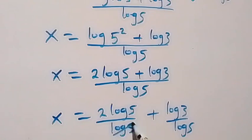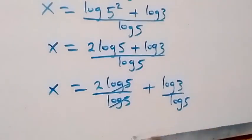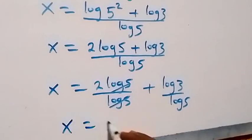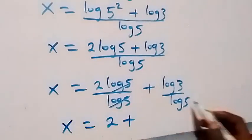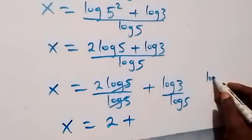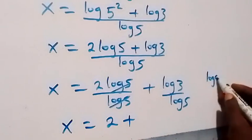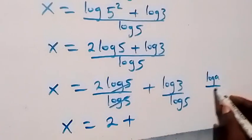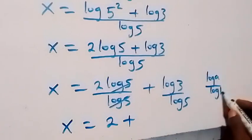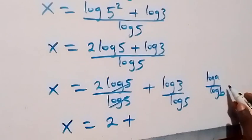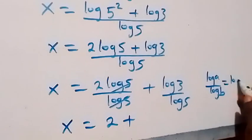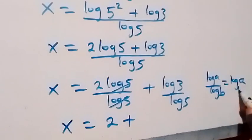Here log 5 cancels with log 5, and we are left with 2. Then x equals to 2 plus the remaining term. We note that log a over log b can be written as log a to base b.